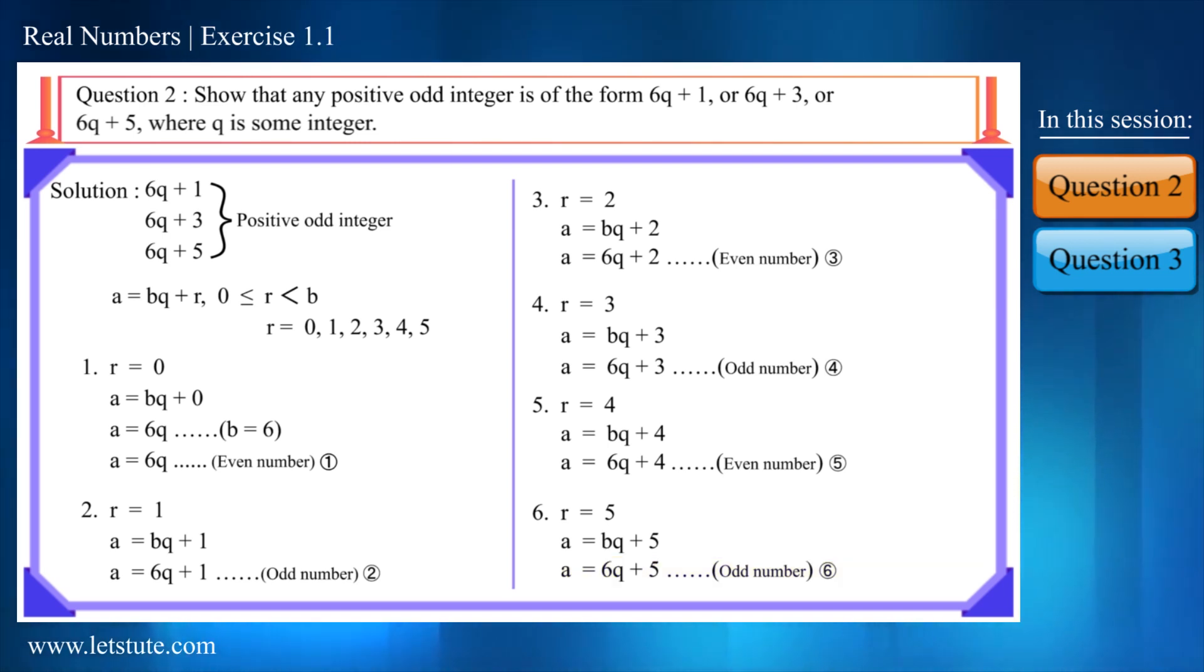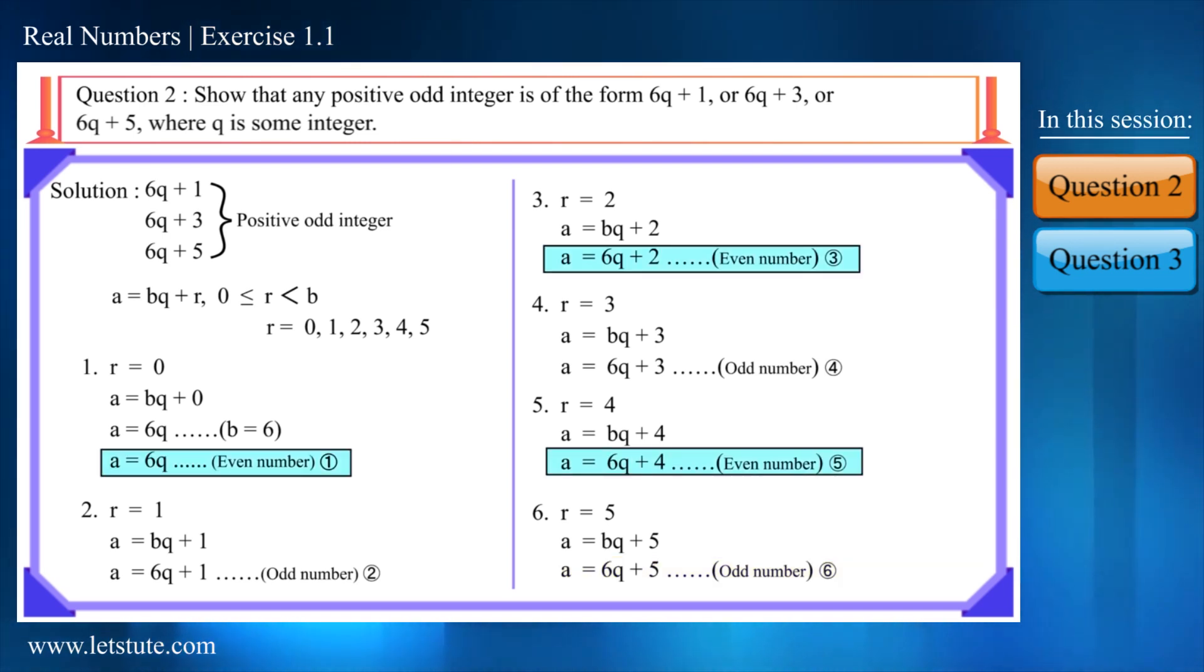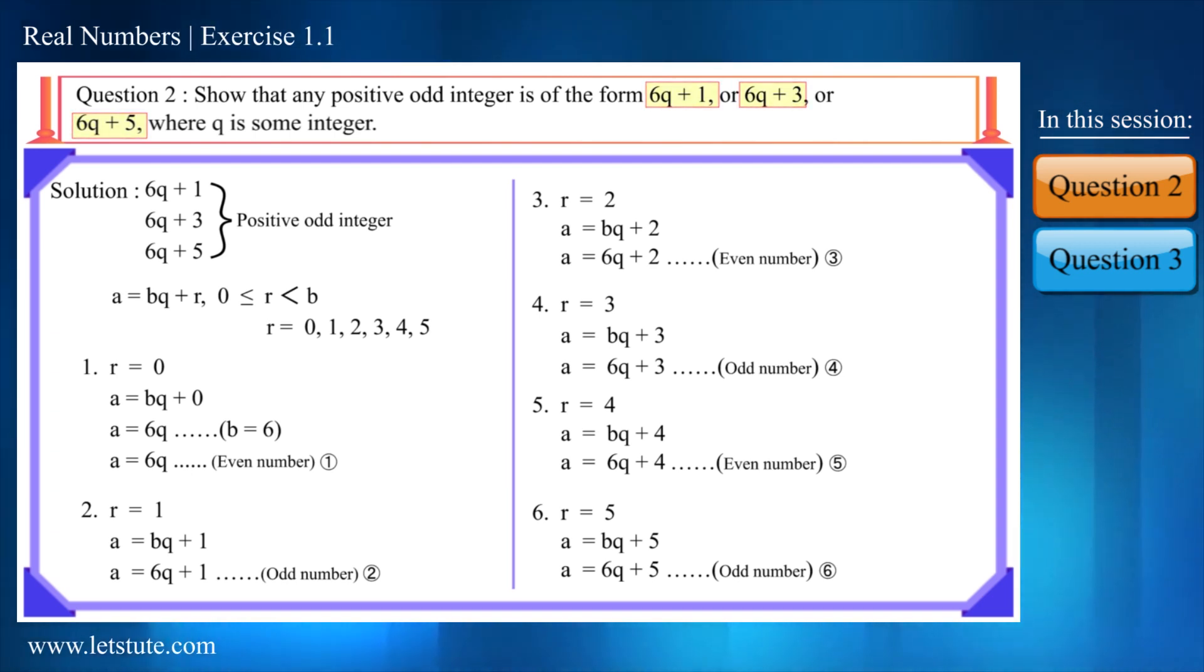You can conclude this in such a way that after an even number an odd number comes. Friends, you can see that in the question we have to prove these numbers are in the form of odd numbers.